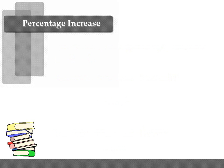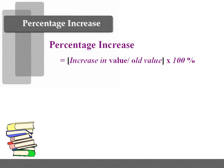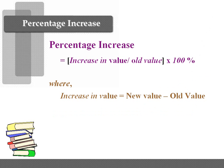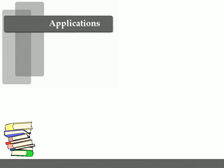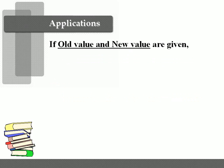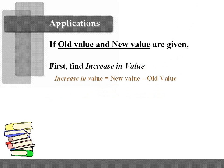Now we will learn about percentage increase. Percentage increase means an increase in value in terms of percent. The formula to find percentage increase is: increase in value divided by old value, times 100. Here, increase in value equals new value minus old value; new value is the value after increase, and old value is the value before increase. To implement the formula, first find the increase in value by subtracting the old value from the new value, then apply the formula.